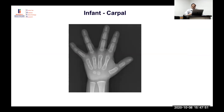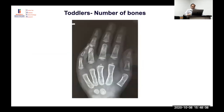Example: an infant X-ray. Capitate and hamate are present — above three months. Smaller epiphyses have also started appearing in the metacarpals, proximal, and middle phalanges, suggesting a slightly older age. In a second example, capitate and hamate are present, epiphyses have appeared up to the middle phalanx but not the distal — consistent with around two to two and a half years.